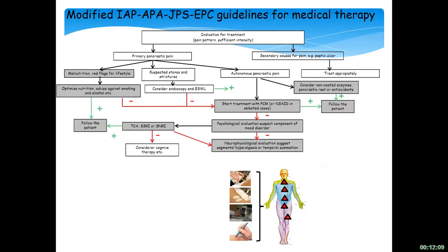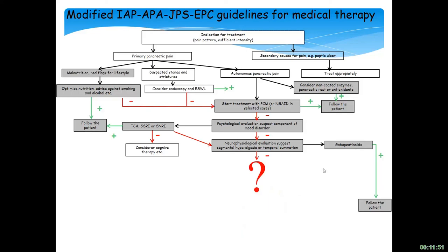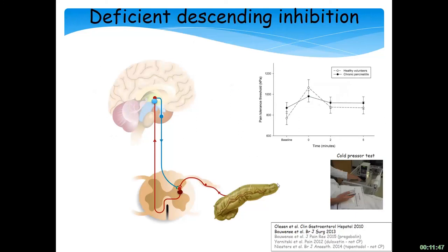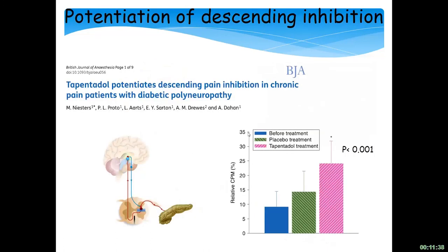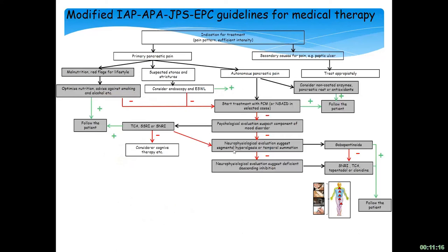We also use quantitative sensory testing to assess descending inhibition. If they have increased temporal summation or specific segmental hyperalgesia, we use pregabalin or gabapentin, and if it works, we follow the patients. If not, we look into descending inhibition — whether they have effective descending inhibition. If they do not, we have the possibility to give different drugs such as Tapentadol, which has been shown to improve descending inhibition, at least when given for about two weeks. We can also use clonidine and other agents.